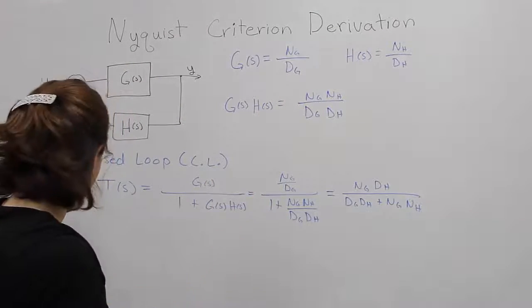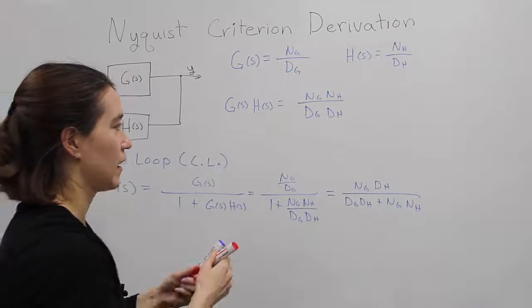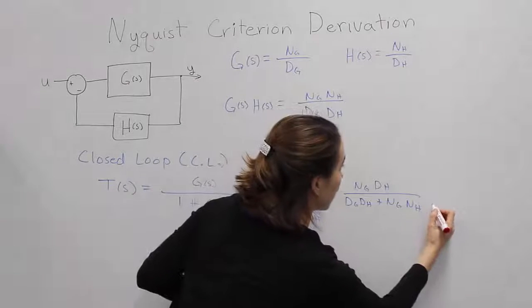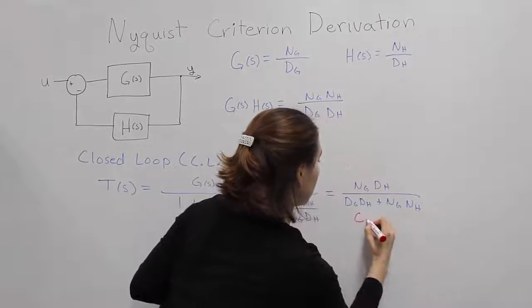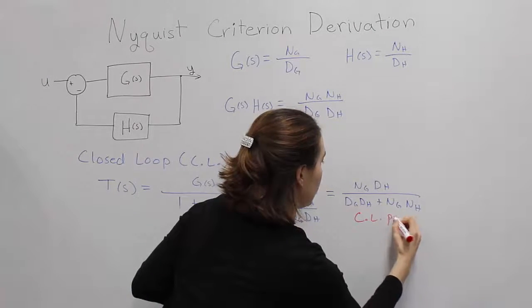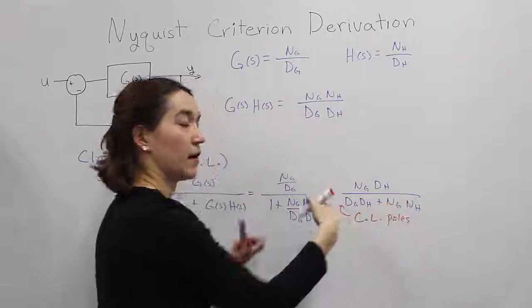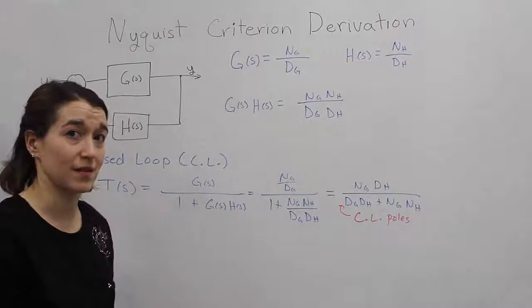The important thing here is that we want to look at the closed-loop poles. So these are the closed-loop poles. They're right here. And these are, of course, important for stability of our closed-loop system.